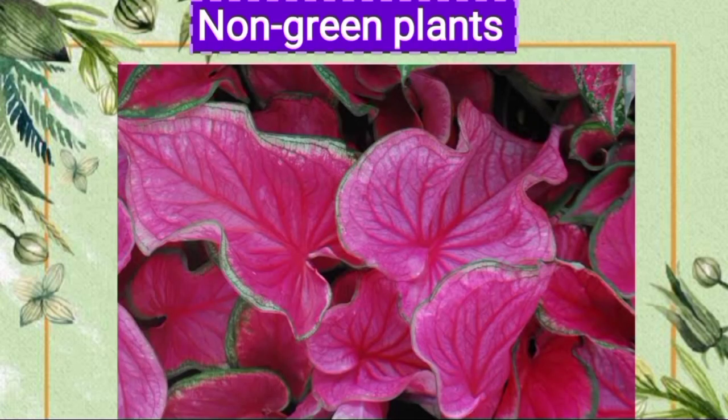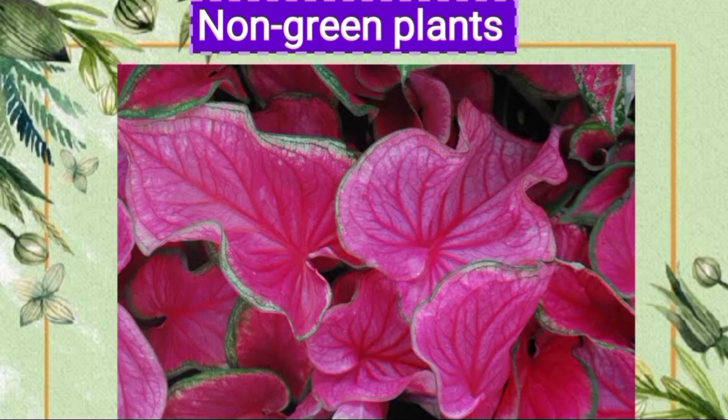Next type is non-green plants. There are many kinds of non-green plants around us. Plants such as Indian pipe and coral root are non-green plants because they do not have chlorophyll. Plants that cannot make their own food and absorb nutrients from dead plants and animals are called saprophytic plants.